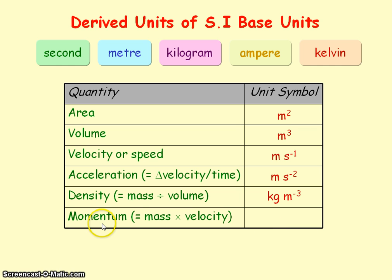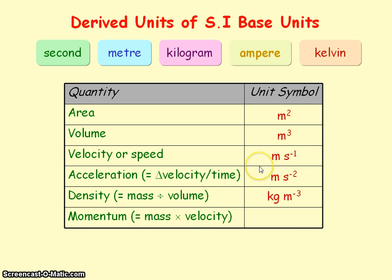Momentum equals mass times velocity, so the units of momentum will equal the units of mass — kg — multiplied by the units of velocity, which is meters per second. So that is kg meters per second.